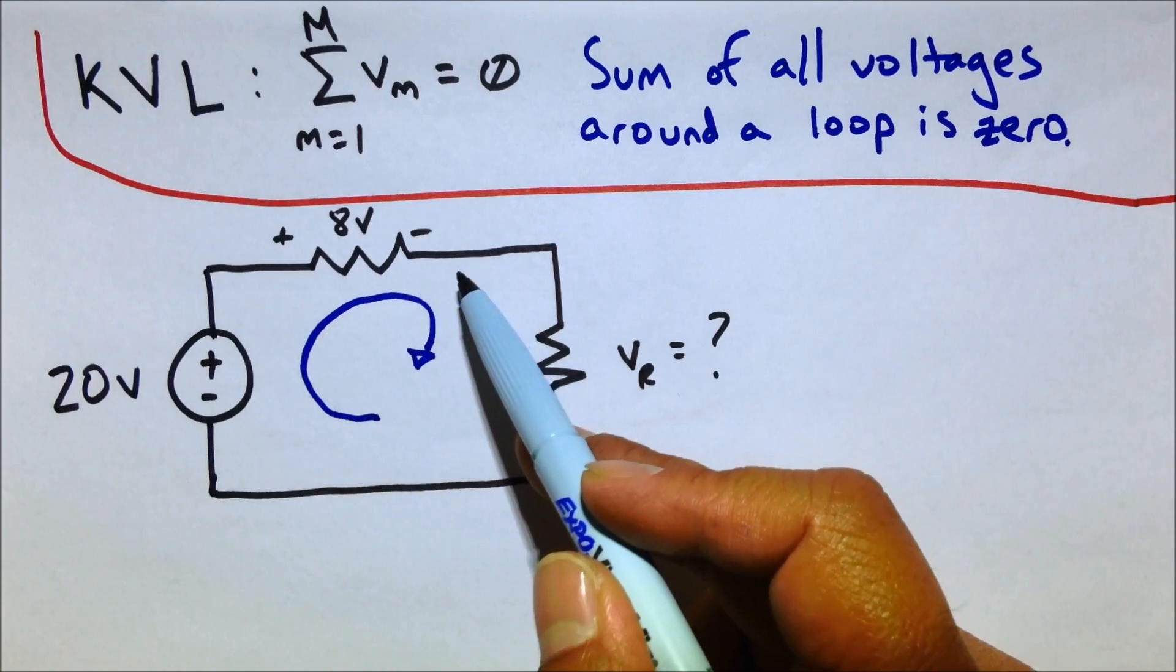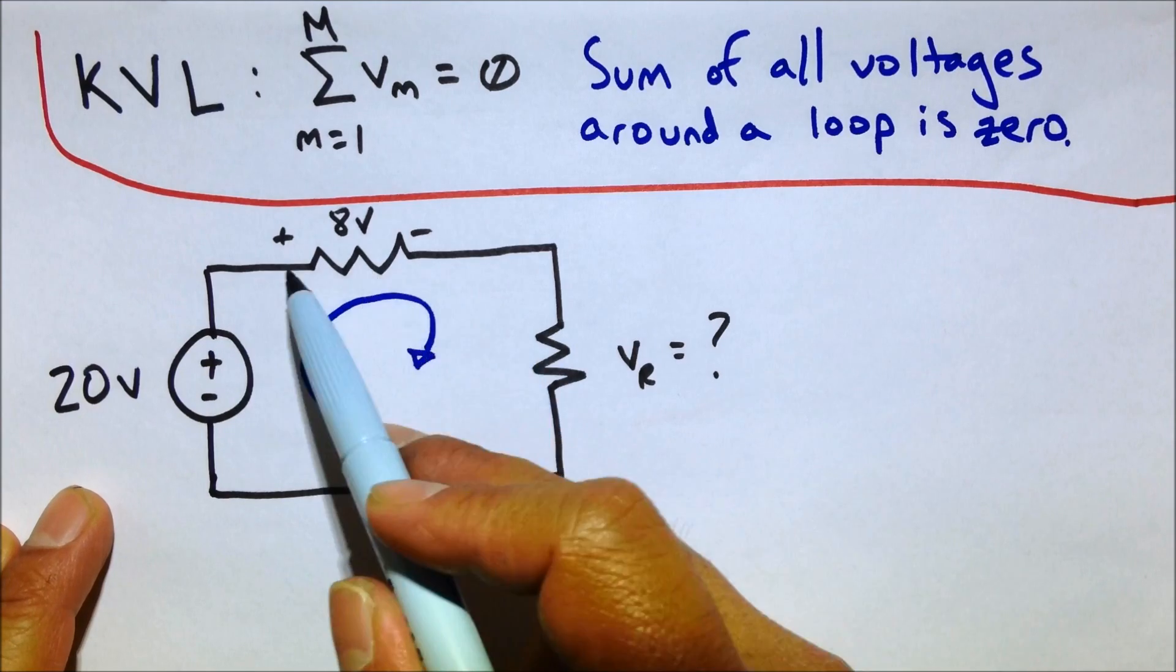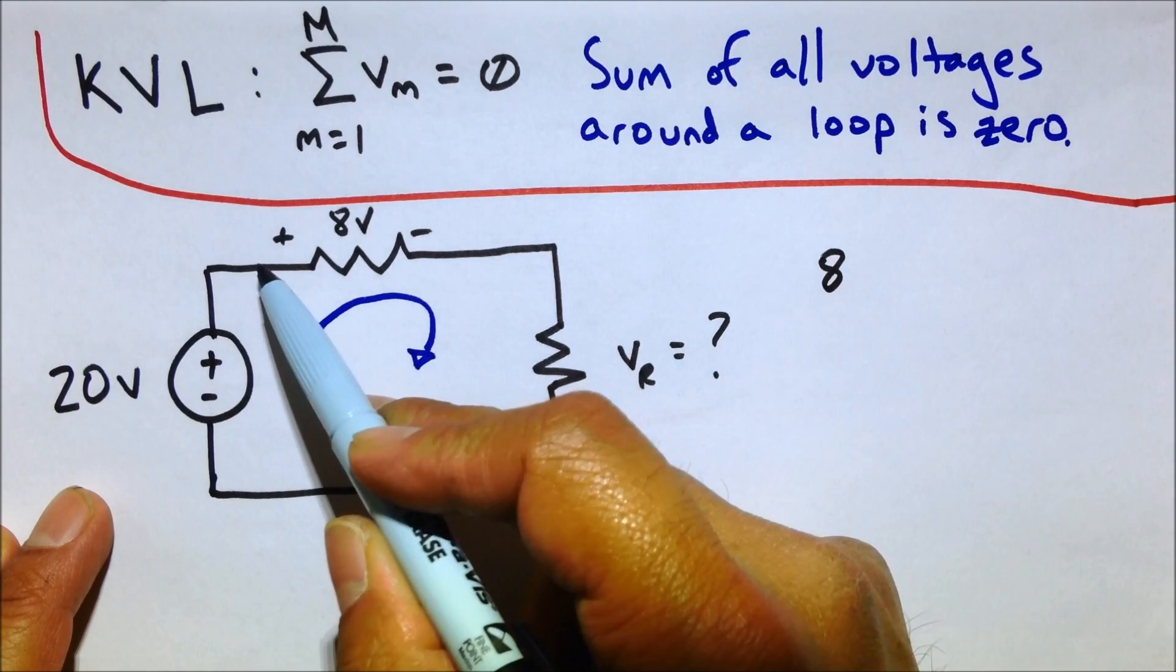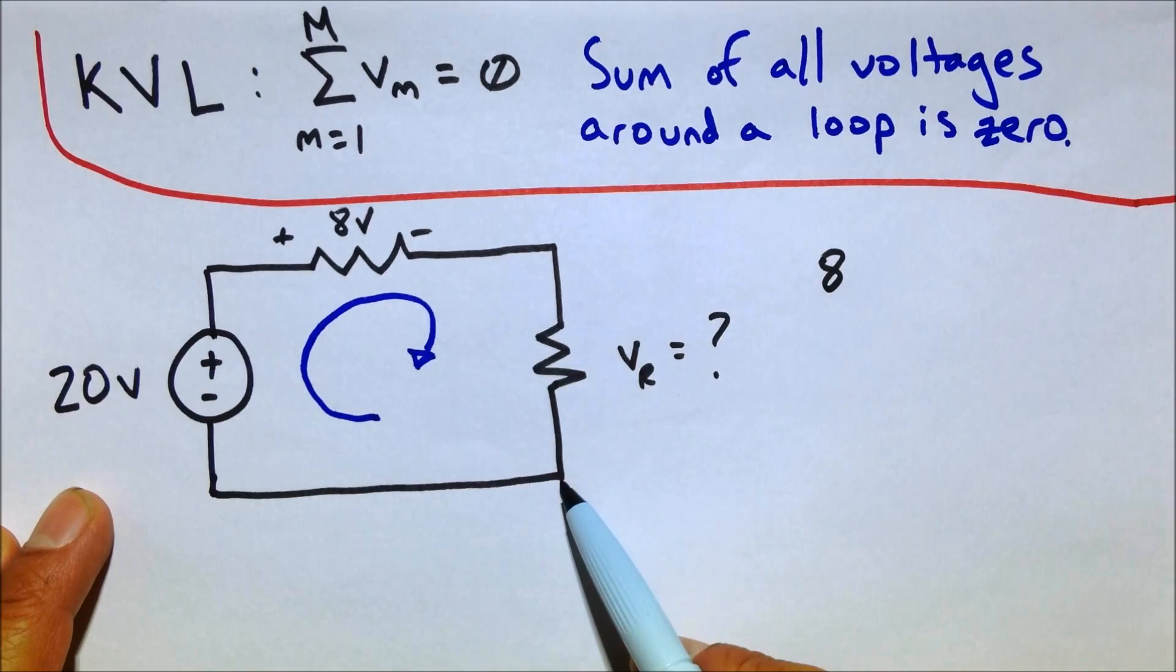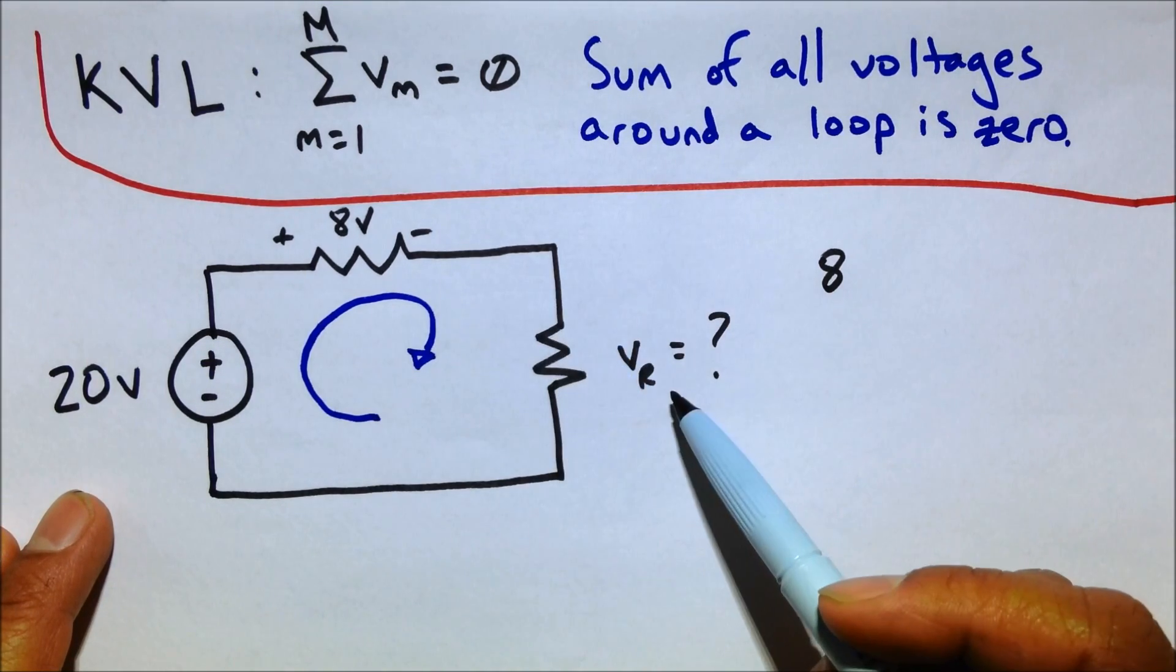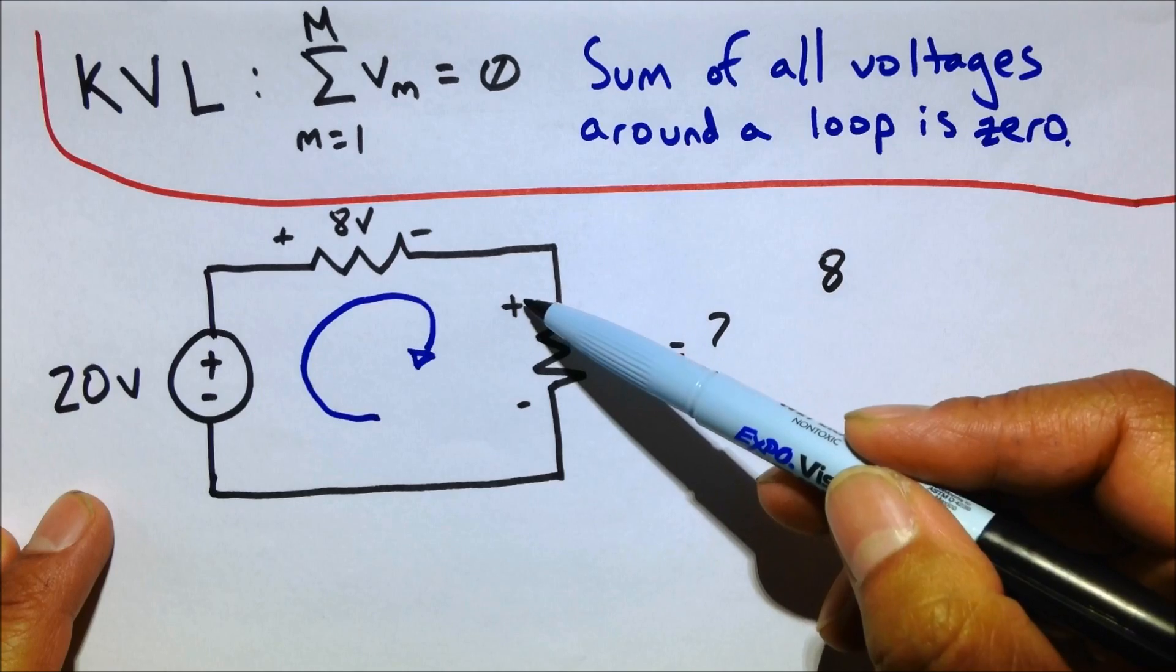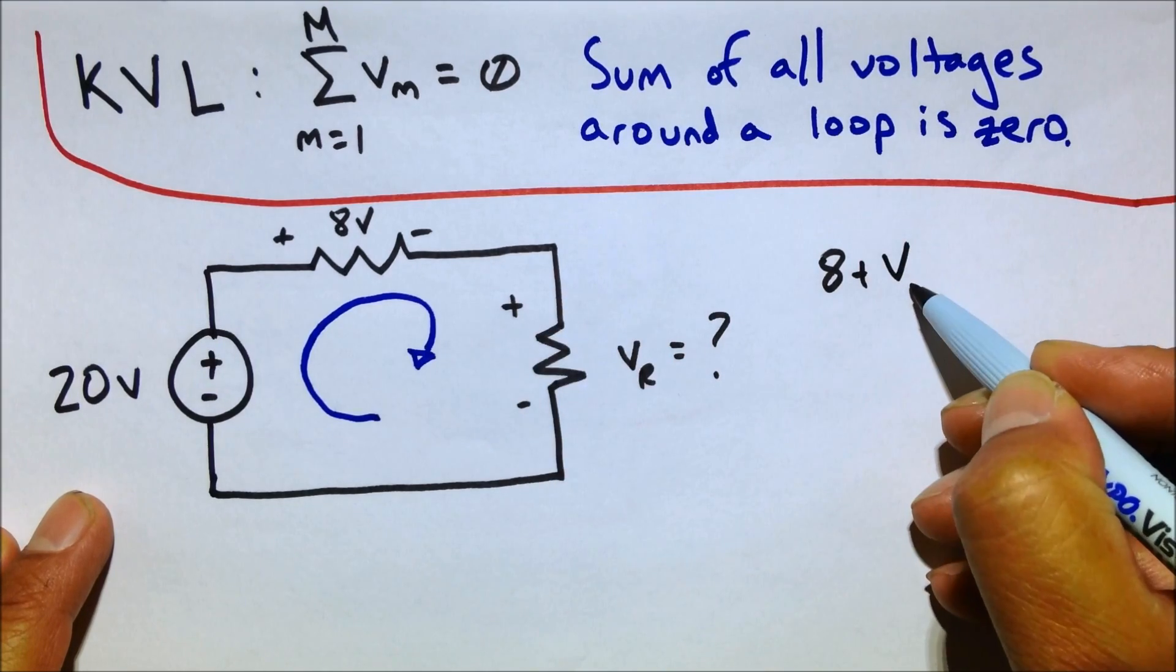So as we go through the loop that way, positive to minus. So that's the correct direction for current flow. So that's going to be eight volts. Eight volts going here. And as we continue down the loop, what's the voltage drop across VR? We don't know. But we're going to say, just arbitrarily, that it's going to be a voltage drop going this way. So we could add VR.